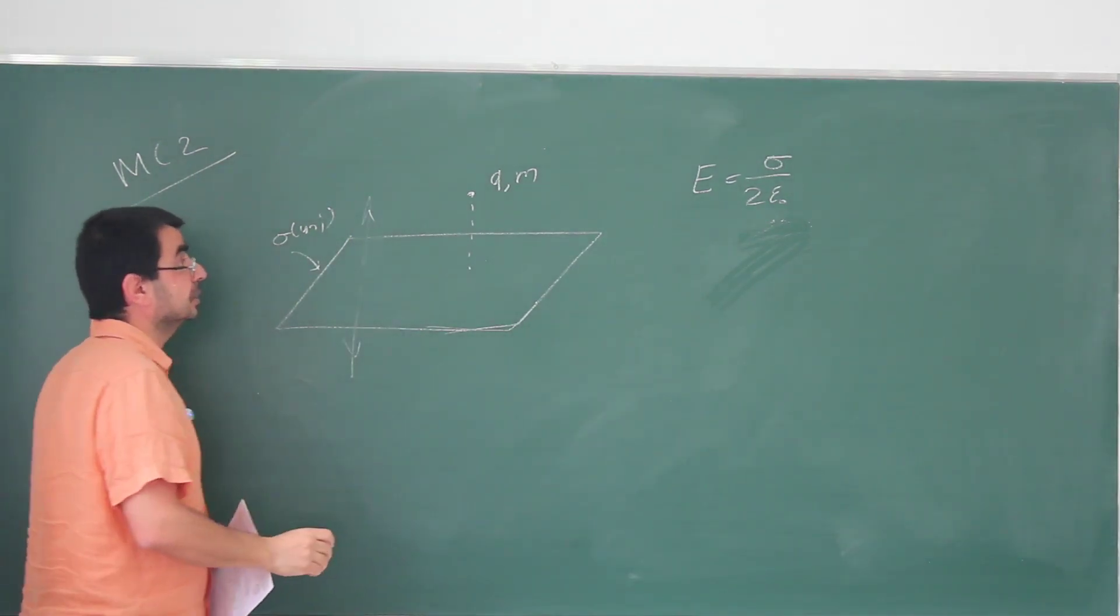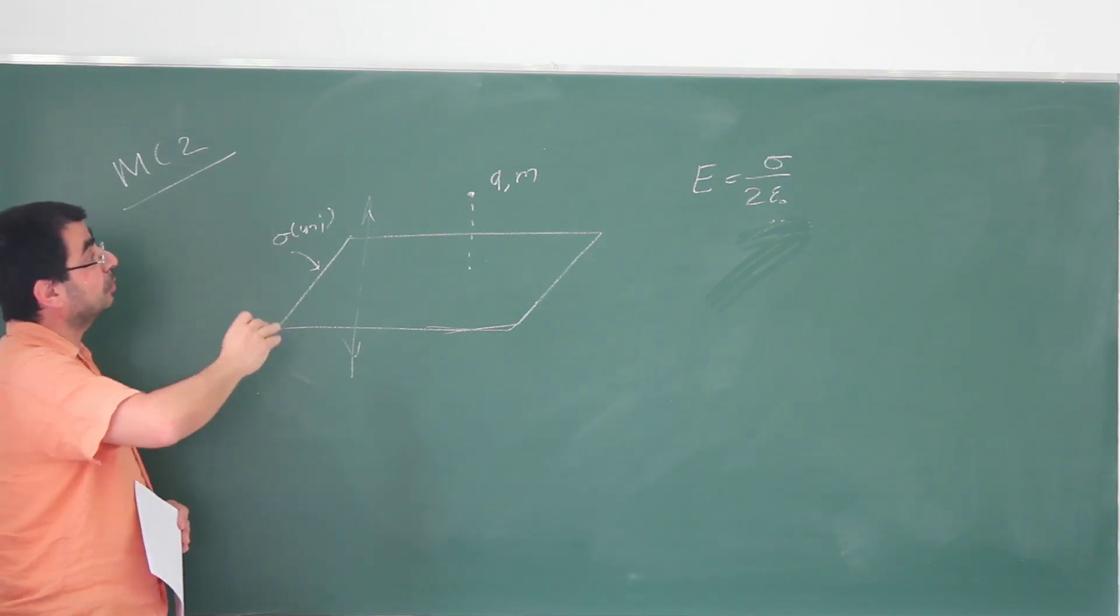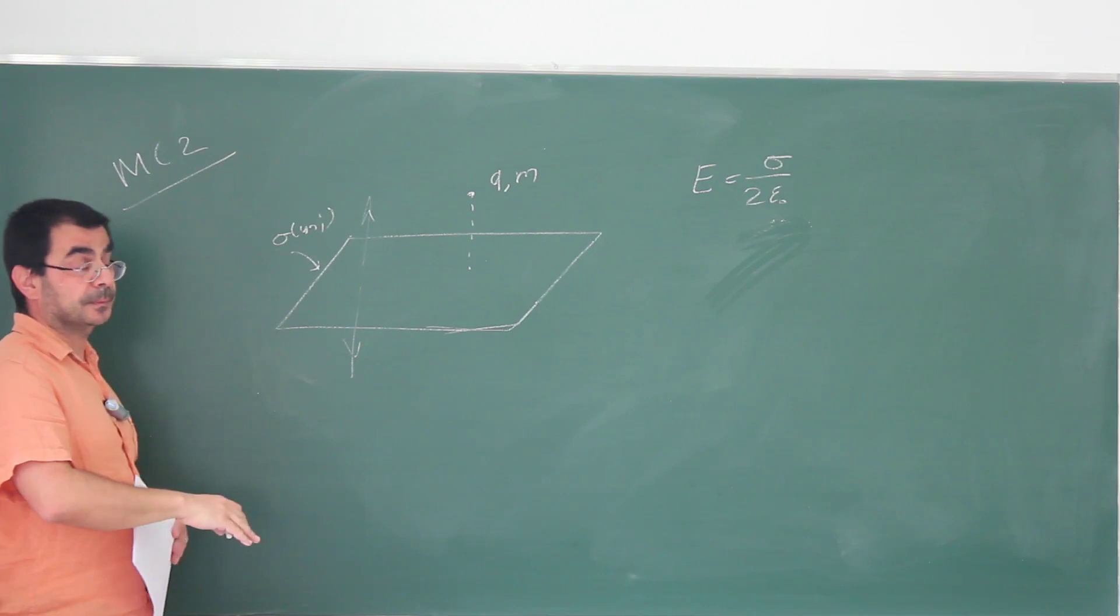The total electric field that's coming out in magnitude is going to be sigma over epsilon naught, but only half of it is pointing up and half of it is pointing down.